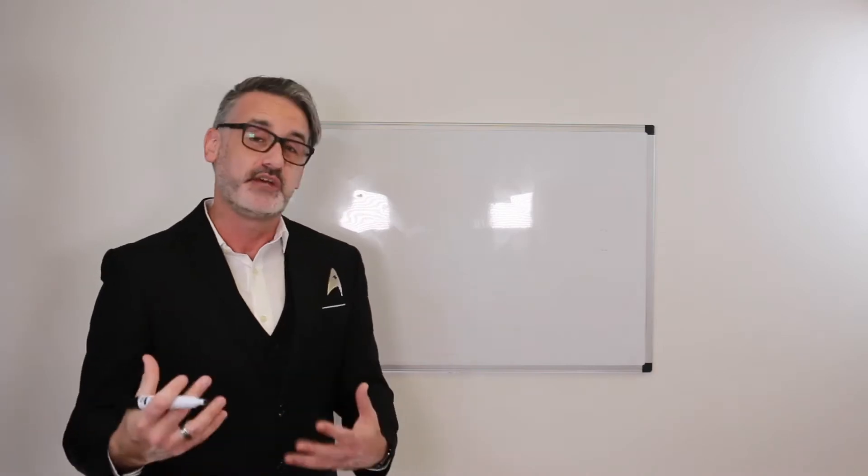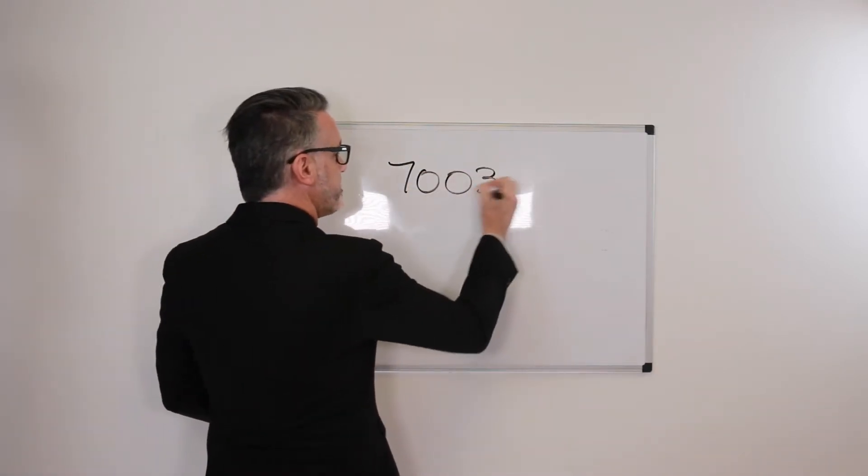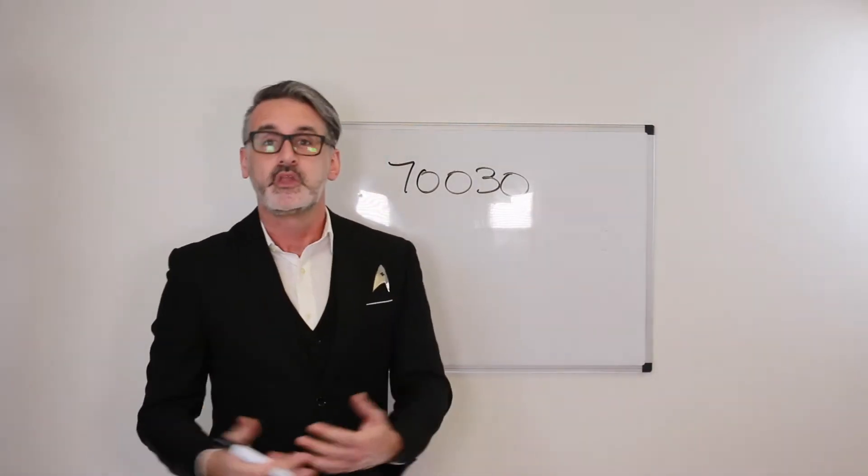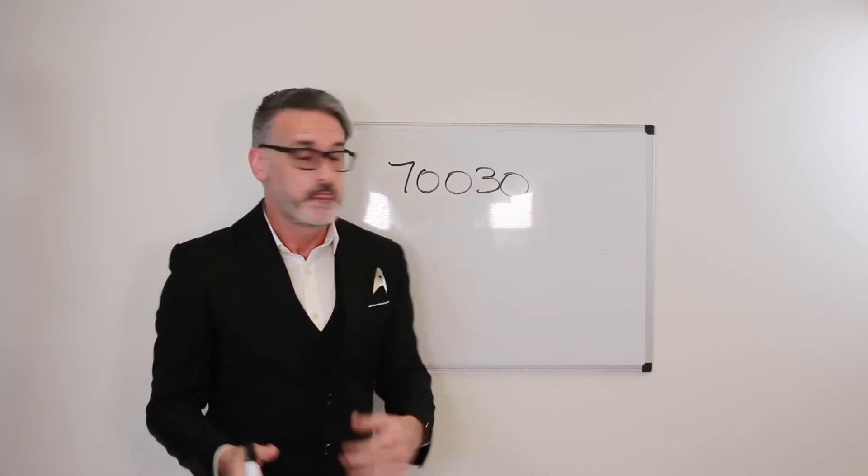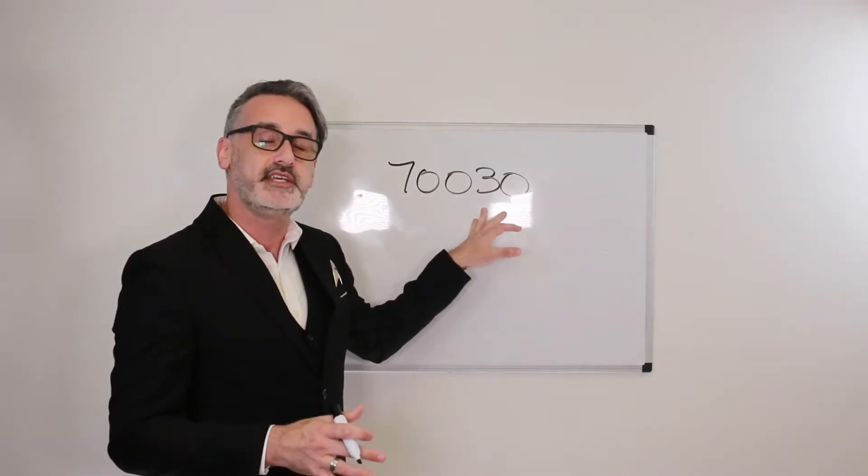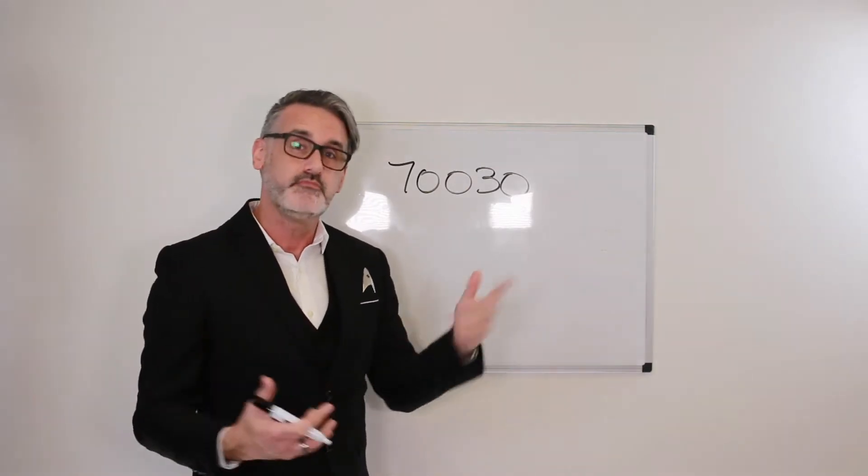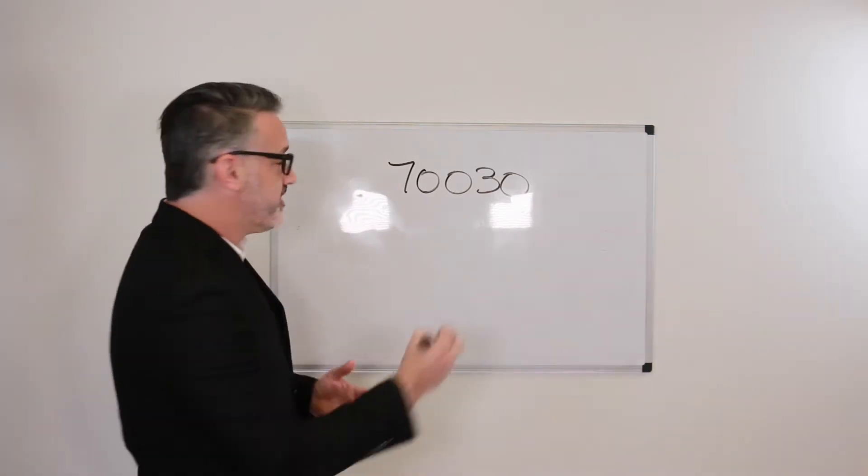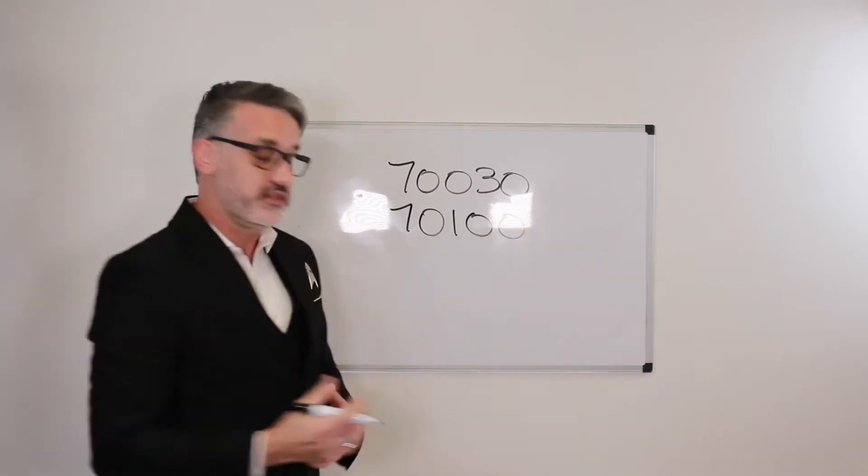So when we're coding, we're looking at the number of views. Sometimes the codes have no number in the CPT code. For example, 70030, the radiologic examination of the eye to detect a foreign body. There's no number in that CPT code. So one view is one x-ray. So one view is one unit of 70030. However, though...